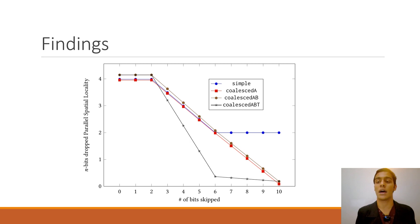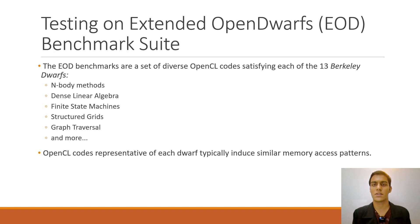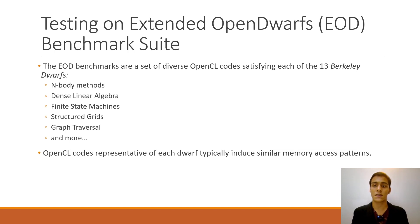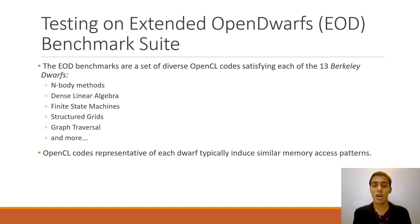With this proof of concept under our belt, we wanted to rigorously test this metric on a diverse range of OpenCL codes and interpret the results. The Extended OpenDwarfs benchmark suite captures the diversity of high performance computing workloads by representing each of the 13 Berkeley Dwarfs — distinct patterns of computations that are common in HPC workloads. The workloads we test against are completely unoptimized for any architecture to avoid bias towards certain technology. This allows us to look at how different computation patterns affect the locality of memory accesses and, as a result, cache and coalesced memory performance on current hardware.